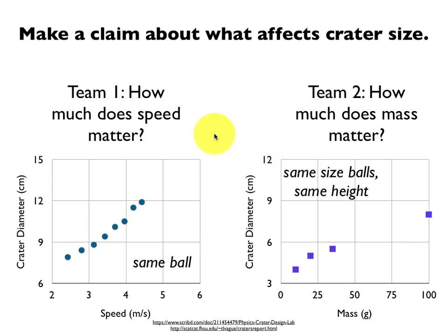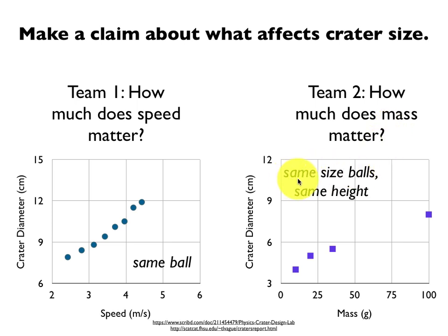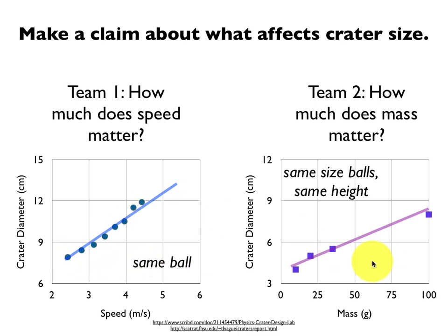In my classroom I have a couple of different teams doing different things. One team is looking at how much speed matters — they took marbles, dropped them at different heights, figured out how fast they were going from each height, and measured the crater diameter, using the same ball every time. A different group wanted to know how much mass mattered — they took balls with the same diameter, dropped them all from the same height, and checked how much mass affected the crater diameter. When we see these results, we ask students to invoke cross-cutting concept number one: patterns and trends. You can see that we can add trend lines and ask: if the speed is faster, can you predict how big the crater diameter is going to be? You can actually have students test their prediction — give them another ball of the same size and have them test it.